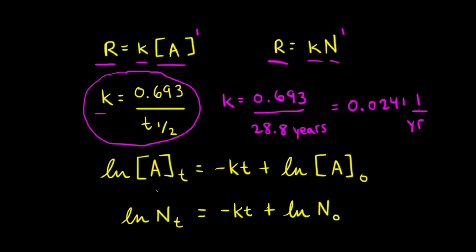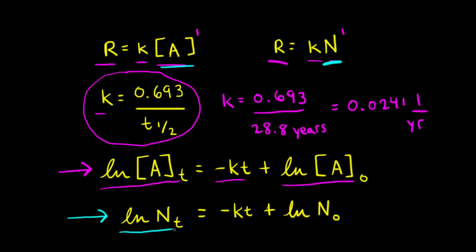Another equation from first-order kinetics is the integrated rate law. It states that the natural log of the concentration of reactant A at time T equals negative KT plus the natural log of the initial concentration of A. Since we're using N — the number of radioactive nuclei — instead of concentration, we write: ln(N) = −KT + ln(N₀), where N₀ is the initial number of radioactive nuclei.